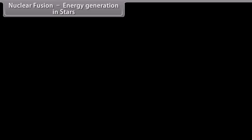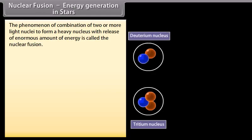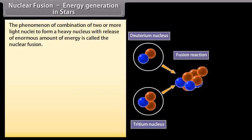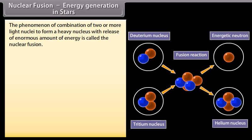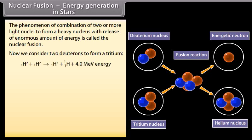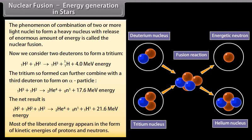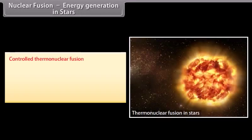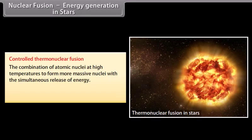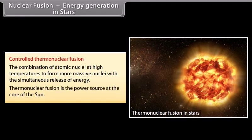Nuclear fusion. Energy generation in stars. The phenomenon of combination of two or more light nuclei to form a heavy nucleus with release of enormous amount of energy is called the nuclear fusion. Now we consider two deutrons to form a tritium. The tritium so formed can further combine with the third deutron to form an alpha particle. The net result is... Most of the liberated energy appears in the form of kinetic energies of protons and neutrons. Controlled thermonuclear fusion: The combination of atomic nuclei at high temperatures to form more massive nuclei with the simultaneous release of energy. Thermonuclear fusion is the power source at the core of the sun.